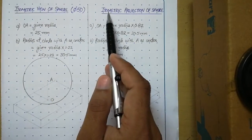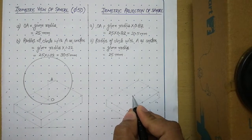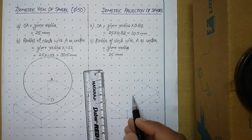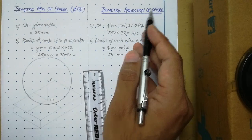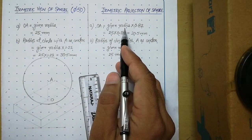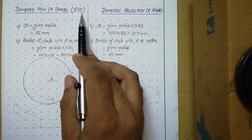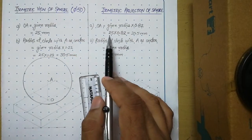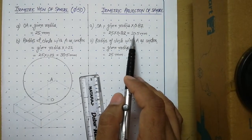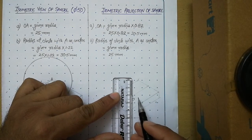If you want to draw the isometric projection of a sphere, the change is as follows. From center O, when you draw a vertical line for the isometric projection, the OA length will be equal to the given radius multiplied by 0.82 — that is the factor. The diameter is 50 mm, so the given radius is 25. Multiply by 0.82 and you get 20.5. So draw a vertical line of length 20.5 mm.